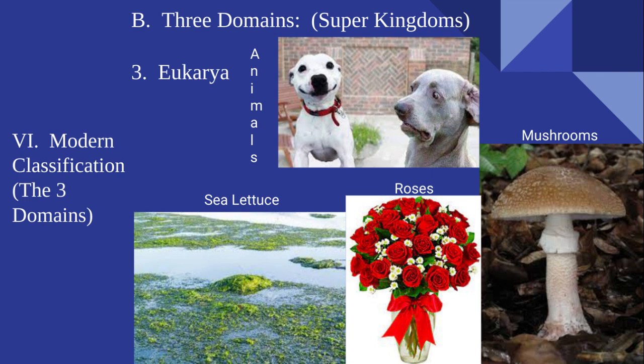In domain eukarya, Plantae includes everything like roses, oak trees, grass, lettuce — essentially anything green you can see in your yard or neighborhood. Last but not least, Animalia, or animals. As shown here, we have a picture of two dogs — one that looks very happy and one that looks slightly confused — which are great examples of animalia.